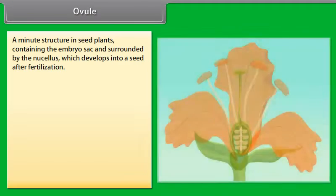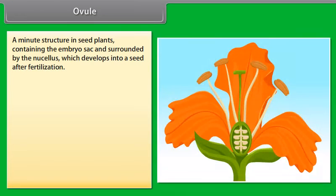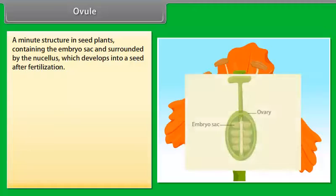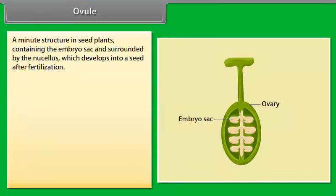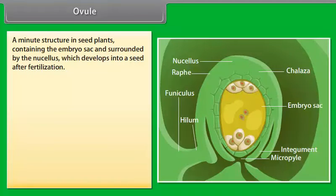Ovule: a minute structure in seed plants containing the embryo sac and surrounded by the nucellus, which develops into a seed after fertilization.